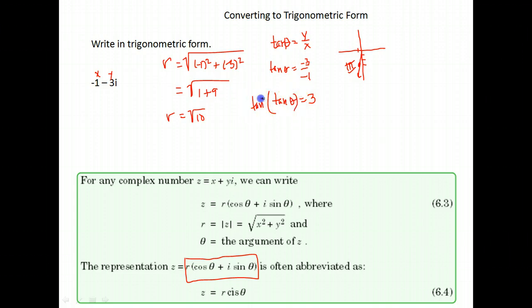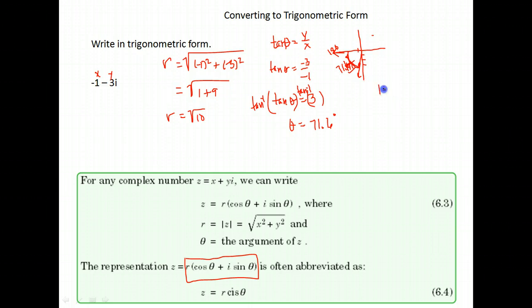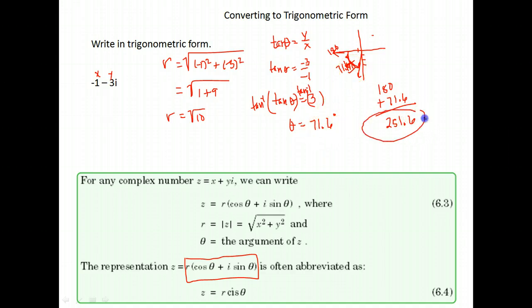We do the inverse tangent of both sides. The inverse tangent of 3 gives 71.56, which I'll round to 71.6 degrees. That's the first-quadrant answer, but I want the angle in the third quadrant. The angle is 71.6 degrees past 180, so this time I take 180 plus 71.6. You can see how important it is to graph your point — I need to use 251.6 degrees.